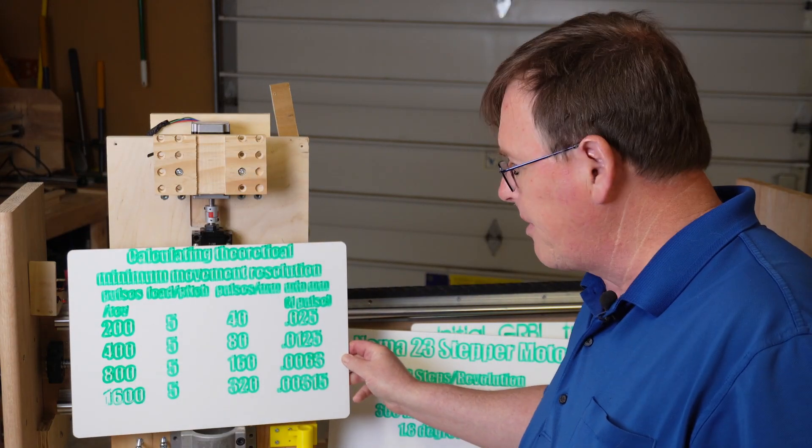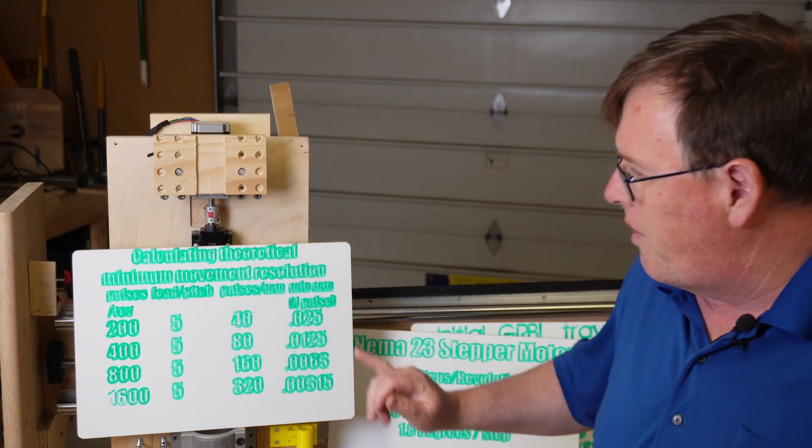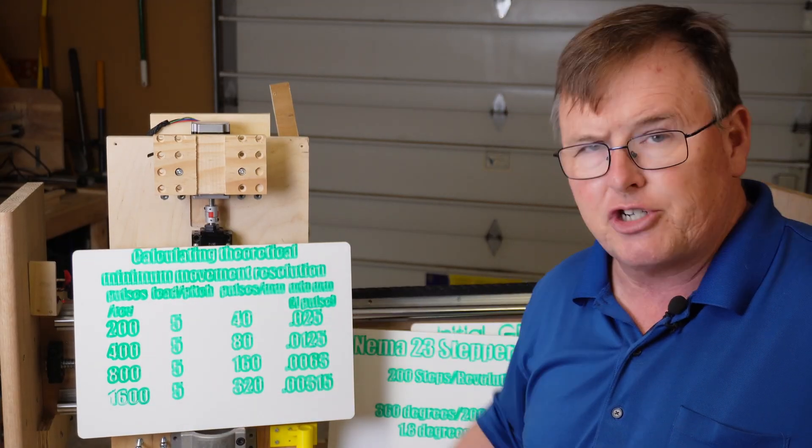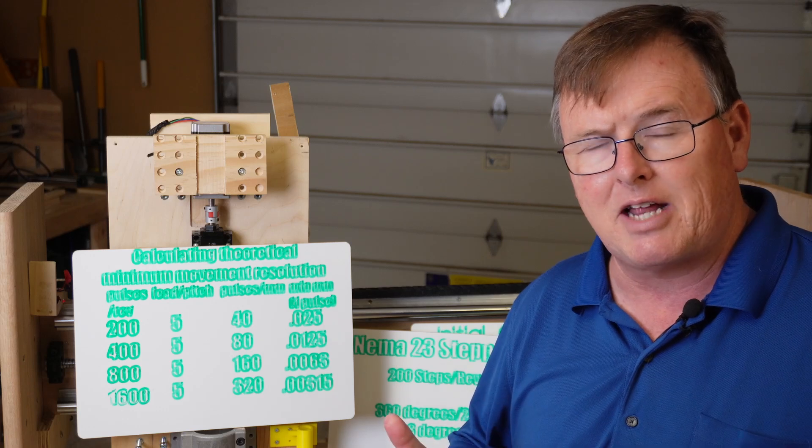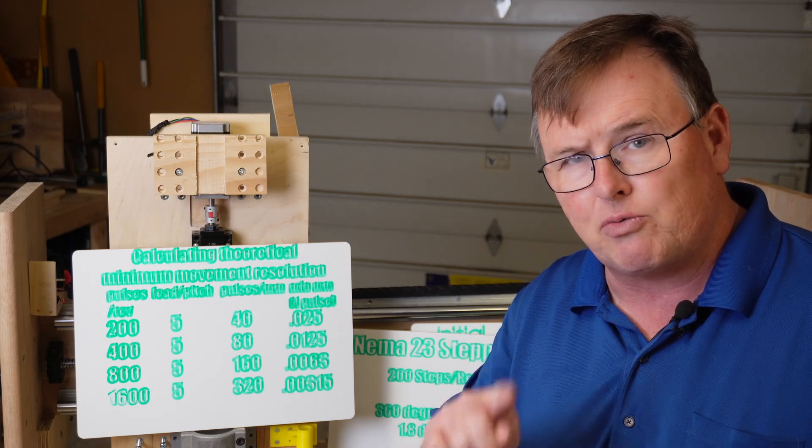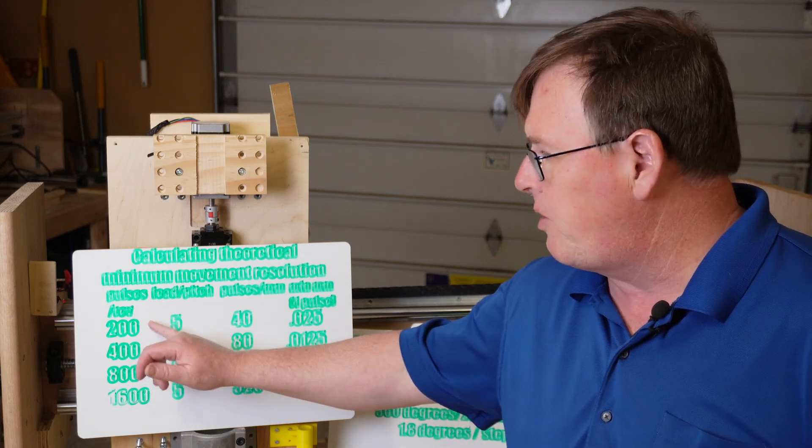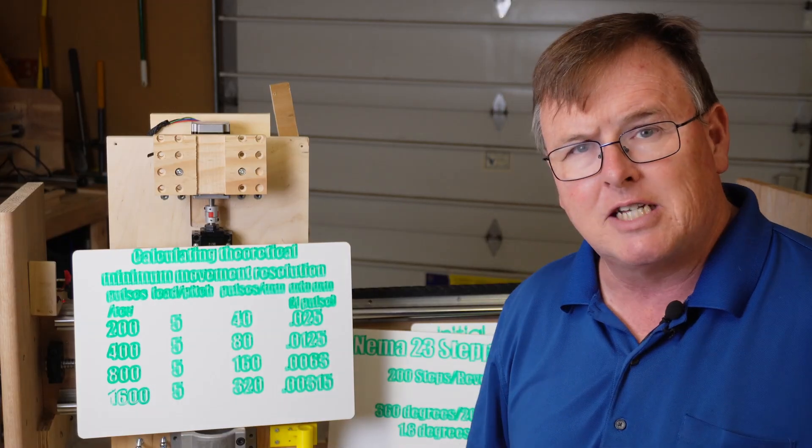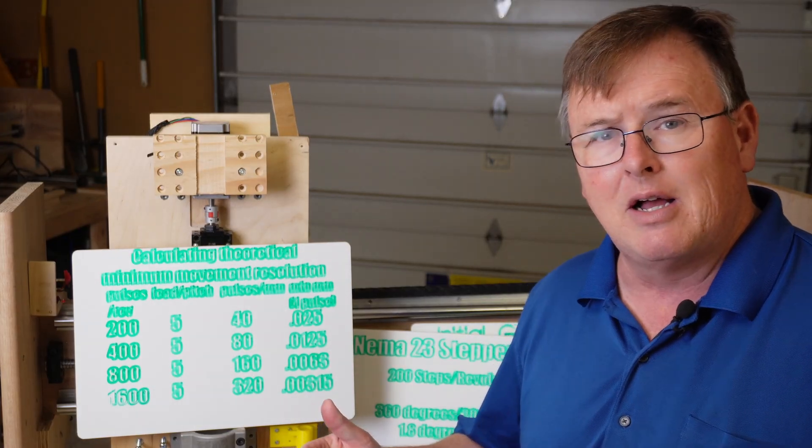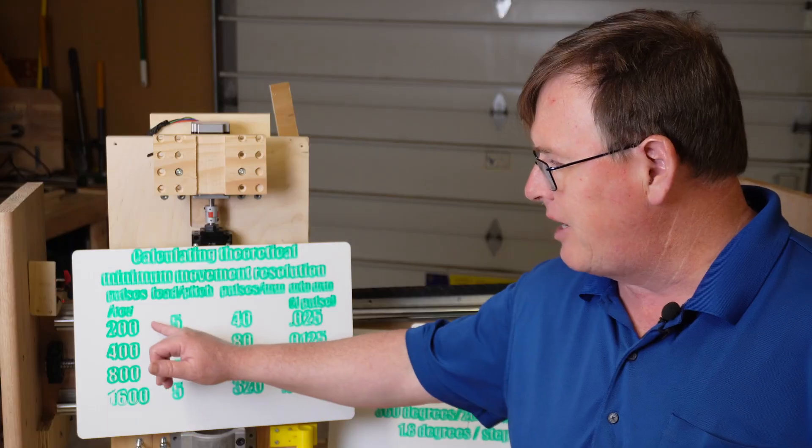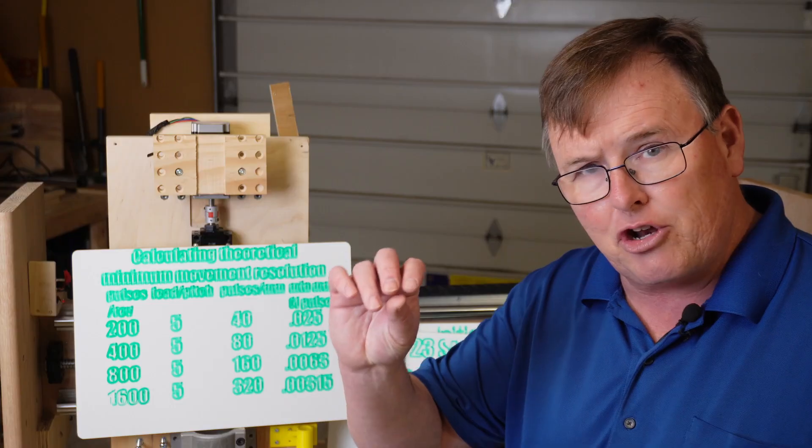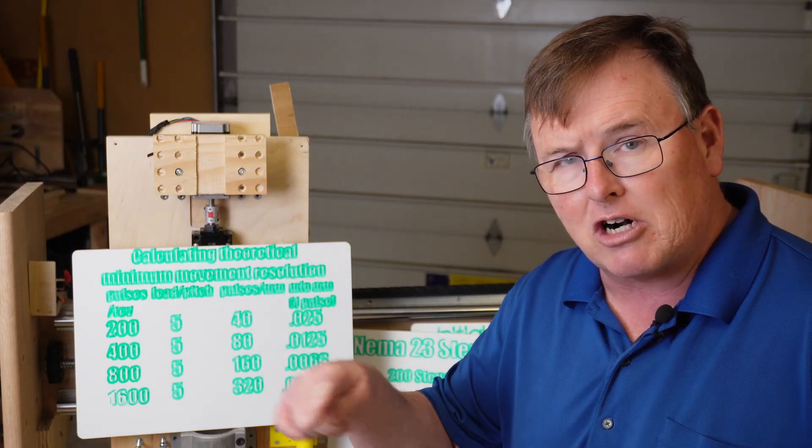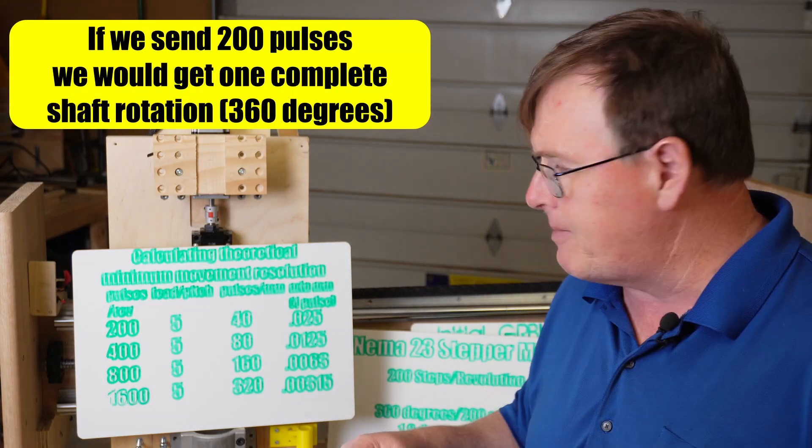Here's a chart of pulses per revolution. This is coming off the stepper motor driver. Let's say we tell our stepper motor driver by setting the switches on the side to do 200 pulses per revolution. Since our NEMA 23 has 200 steps per revolution, if we tell our stepper motor driver to do 200, it's doing full steps. That means that it's going to do one complete rotation of our shaft of our NEMA 23.